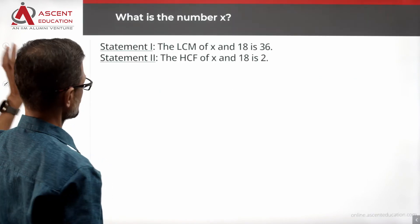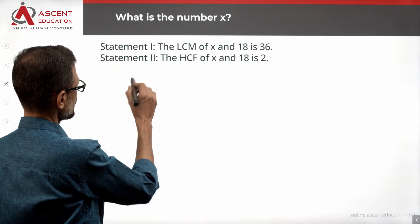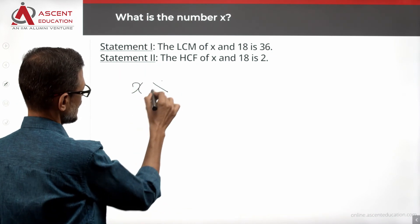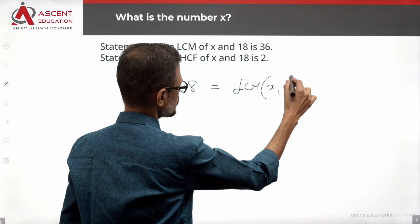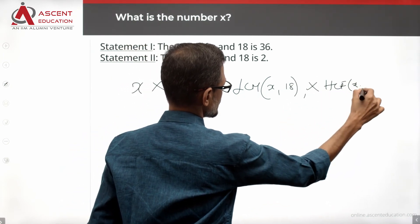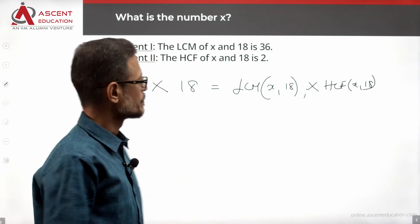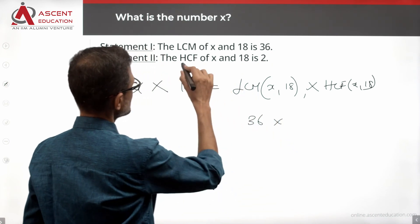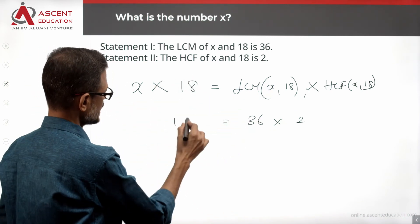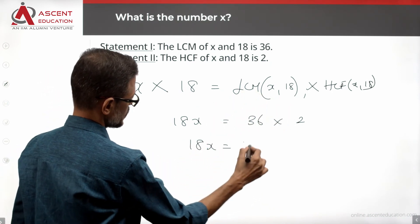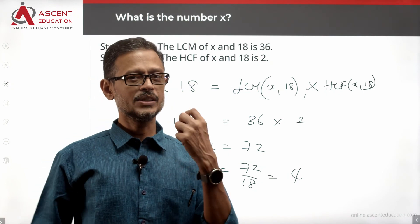Now let's combine the two statements: LCM of x and 18 is 36, and HCF of x and 18 is 2. The product of two numbers always equals the product of their LCM and HCF. So: x × 18 = LCM × HCF = 36 × 2. Therefore, 18x = 72, which gives x = 72 ÷ 18 = 4. We are able to find one single unique value for x.